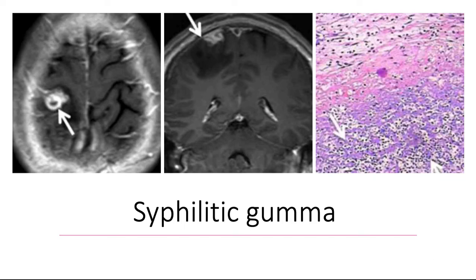Once common, gummas have become exceedingly rare thanks to effective antibiotics such as penicillin. They are reported now mostly in patients with AIDS. Syphilitic gumma can be seen on the pictures on the slide. The marked ring-like enhancement on the left picture, shown by the white arrow, with a dural tail as on the picture in the middle, and hematoxylin and eosin staining reveals a small hemorrhage and extensive inflammatory cell infiltration, predominantly of lymphocytes and plasma cells, shown by the arrows in the gumma.